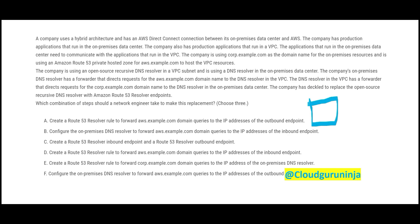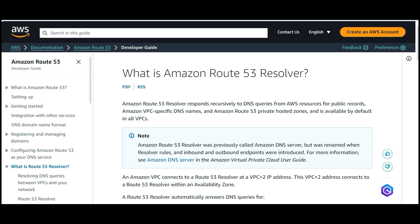There is an on-premises data center where applications are running in production, and they also have an AWS VPC. Applications running on-premises want to communicate with resources on AWS, and there is a DNS resolver on premises. We need to make use of Route 53 Resolver endpoints. The Route 53 Resolver responds recursively to DNS queries from AWS sources.